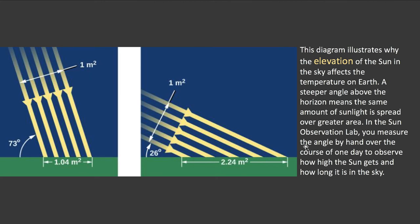To see why the tilt affects the seasons, consider sunlight coming in at two different angles. When the sun is high in the sky — say at 73 degrees elevation — that's your summer sunlight, and one square meter of sunlight gets spread over just 1.04 square meters. But when the sun comes in at 26 degrees, that same square meter of sunlight gets spread over 2.24 square meters. The same amount of sunlight spread over a bigger area means it's less intense — so colder in winter and warmer in summer.